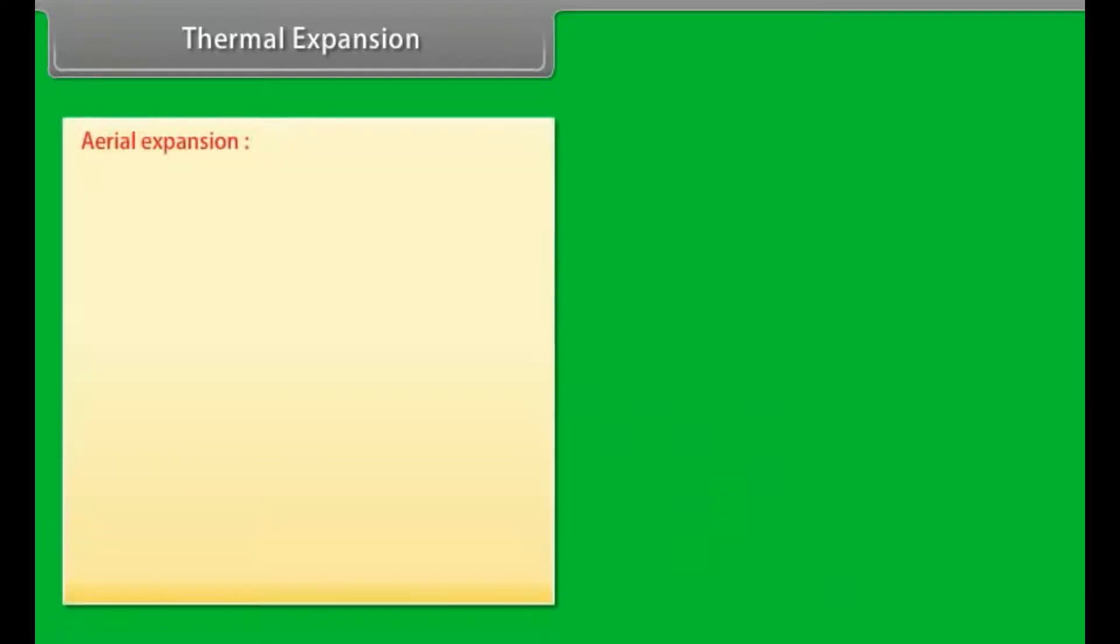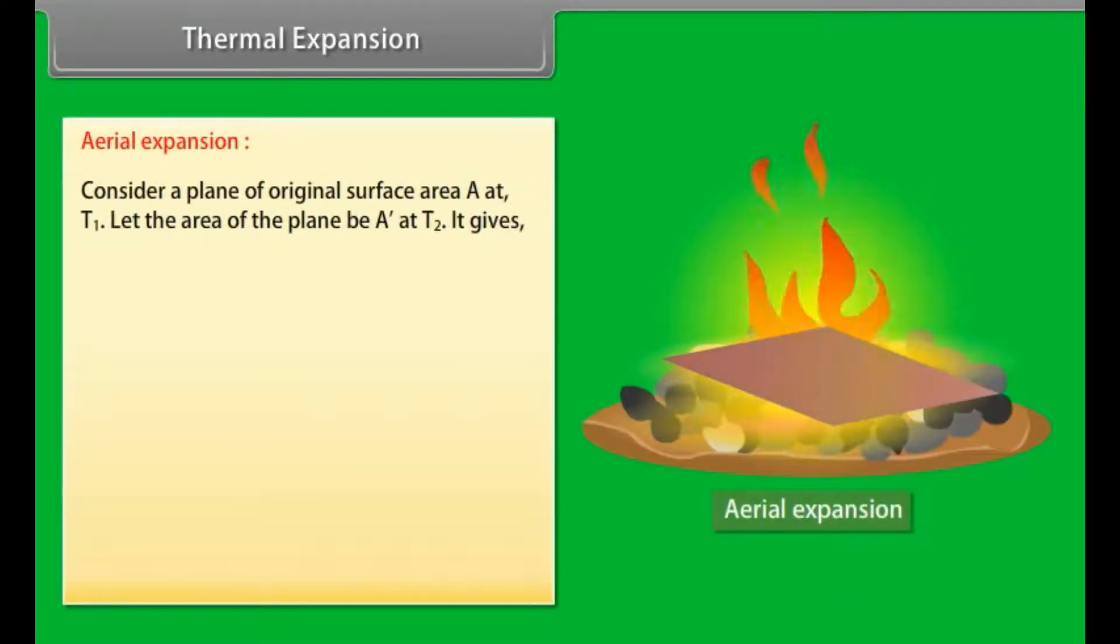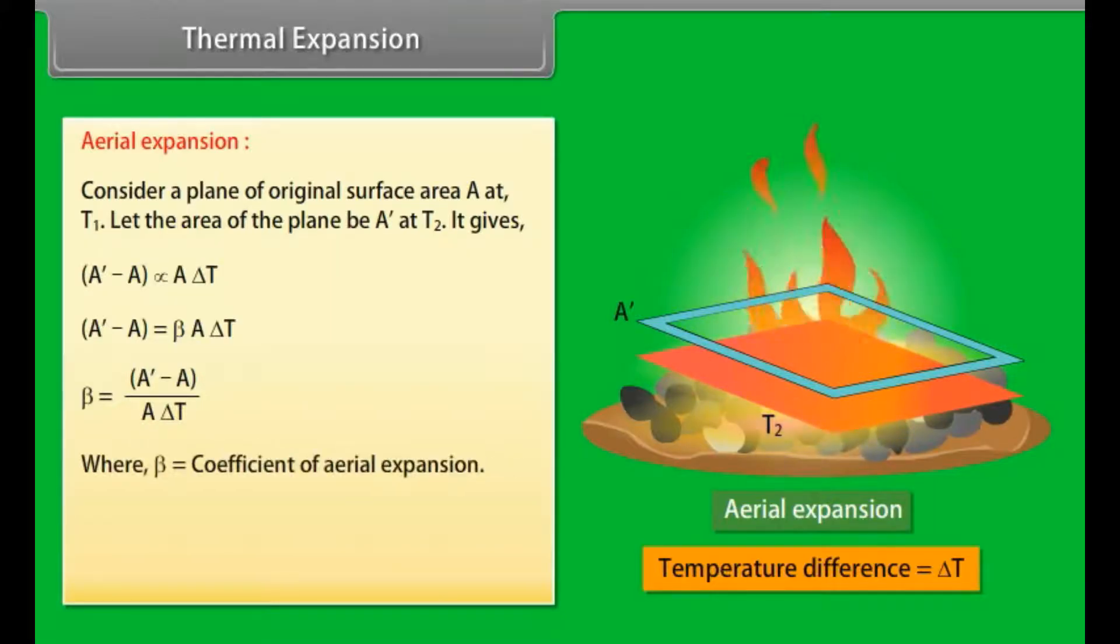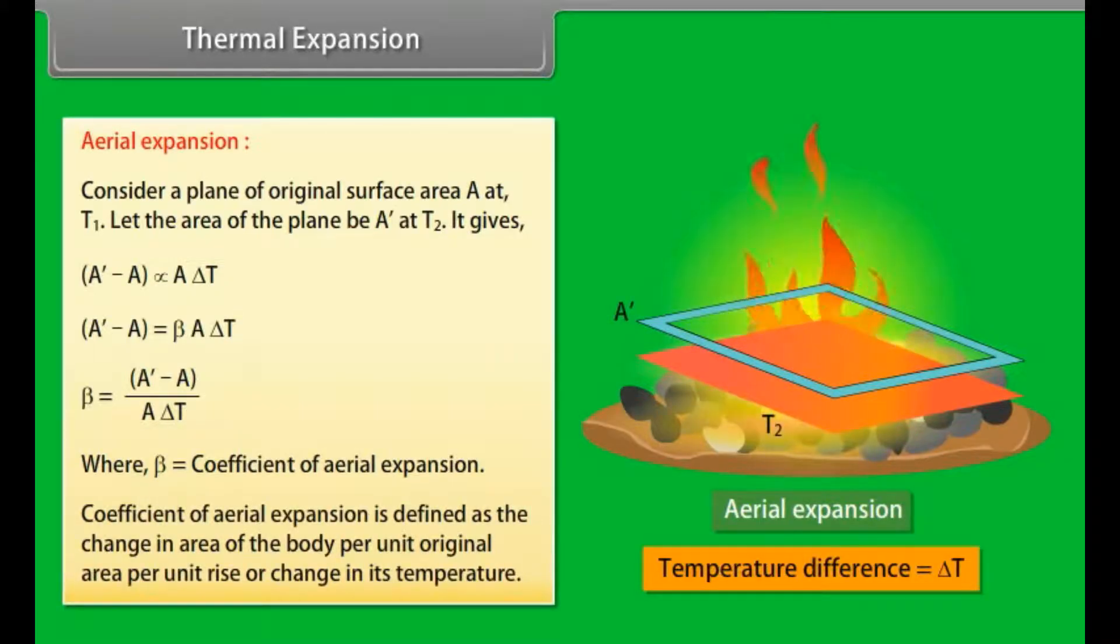Aerial expansion. Consider a plane of original surface area A at temperature T₁. Let the area of the plane be A' at temperature T₂. It gives A' - A ∝ A ΔT or A' - A = β A ΔT. Value of β = (A' - A)/(A ΔT), where β = coefficient of aerial expansion. Coefficient of aerial expansion is defined as the change in the area of the body per unit original area per unit rise or change in its temperature.